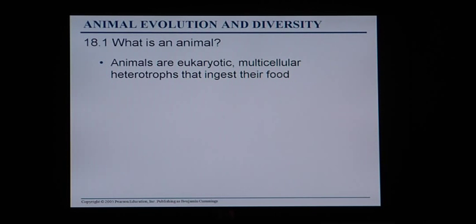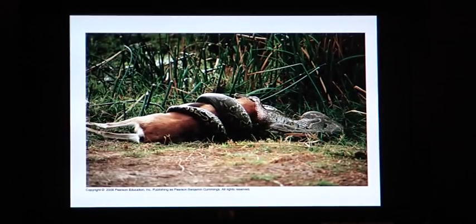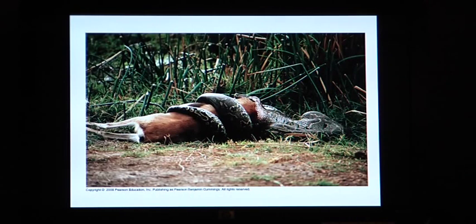So first, what is an animal in general? Animals are eukaryotic multicellular heterotrophs that ingest their food. Eukaryotic means they have cells that have a nucleus; multicellular means they are made up of a lot of different cells; and heterotrophs means we have to eat our food — our food is not made inside our bodies. Here's an example of how animals eat: we can see this constricting snake eating what looks to be an entire deer. Once it finishes this meal, it will probably not have to eat for a matter of months.